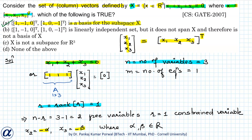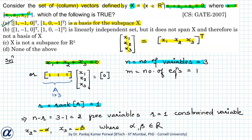Note that the basis for a given vector space is not unique. If instead of x2 and x3 we had taken some other two variables as free variables, we would have obtained a slightly different-looking basis, but it would also be a valid basis for subspace X.